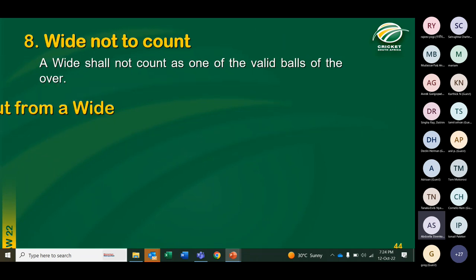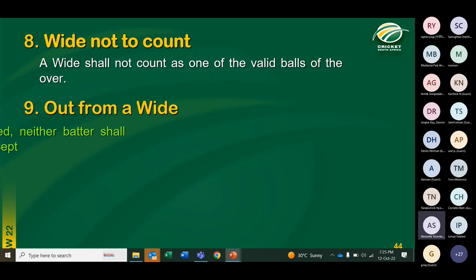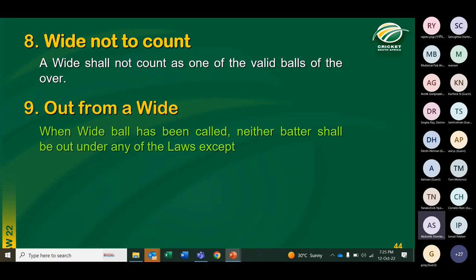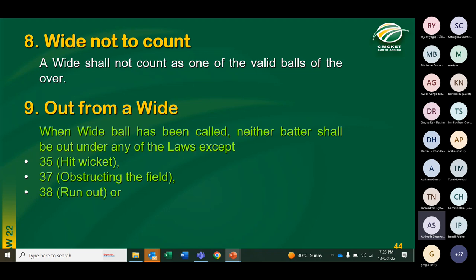Any runs completed by the batters or a boundary allowance together with the wide penalty shall be scored as wide extras. So if a wide goes past the keeper and over the boundary, it will be five runs total — one for the wide and four for the boundary. Wide shall not count as one for the over. There are four ways to be dismissed off a wide: hit wicket, obstructing the field, run out, and stumped — those are the only dismissal methods off a wide.